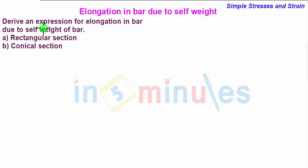Problem statement is derive an expression for elongation in a bar due to self weight of bar for two sections. First is a rectangular section and second is a conical section.